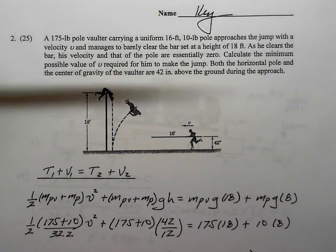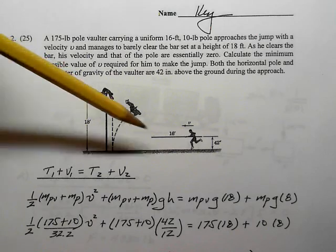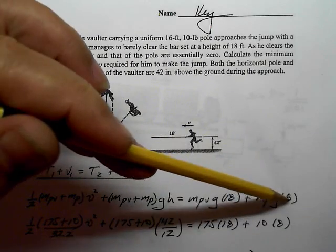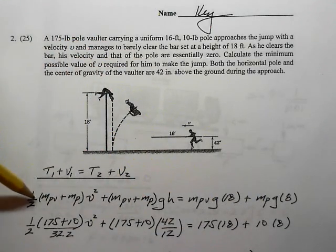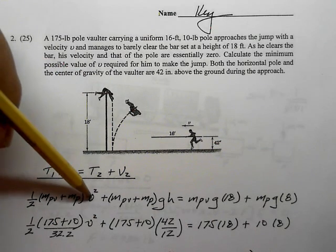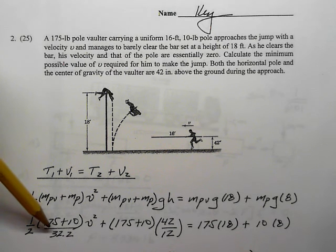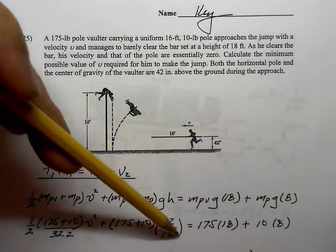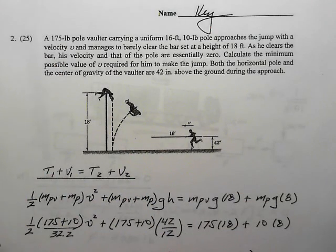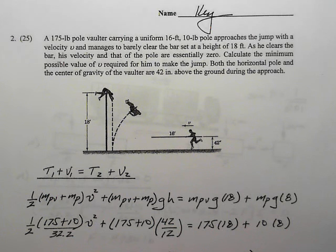On the right side we have V2 of the man and V2 of the pole, but their heights are different now. The man is at the full height of 18 feet, but the pole — being 16 feet long and standing straight up — has its center of gravity at a height of 8 feet. After all this energy accounting we have one equation, one unknown. Plugging in the 175-pound man and 10-pound pole masses (divided by 32.2), and converting 42 inches to feet, we find the vaulter's minimum velocity is 30 feet per second, or about 20.4 miles per hour.